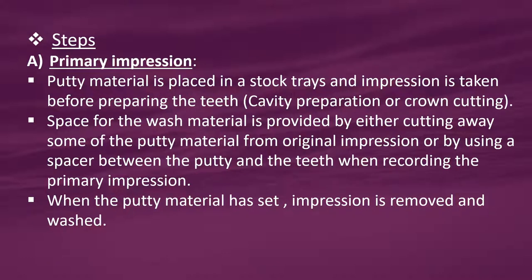Steps — Primary impression: putty material is placed in a stock tray and the impression is taken before preparing the teeth (i.e. before cavity preparation or crown cutting). Space for the wash material is provided by either cutting away some of the putty from the original impression or by using a spacer between the putty and the teeth when recording the primary impression. When the putty material has set, the impression is removed and washed.